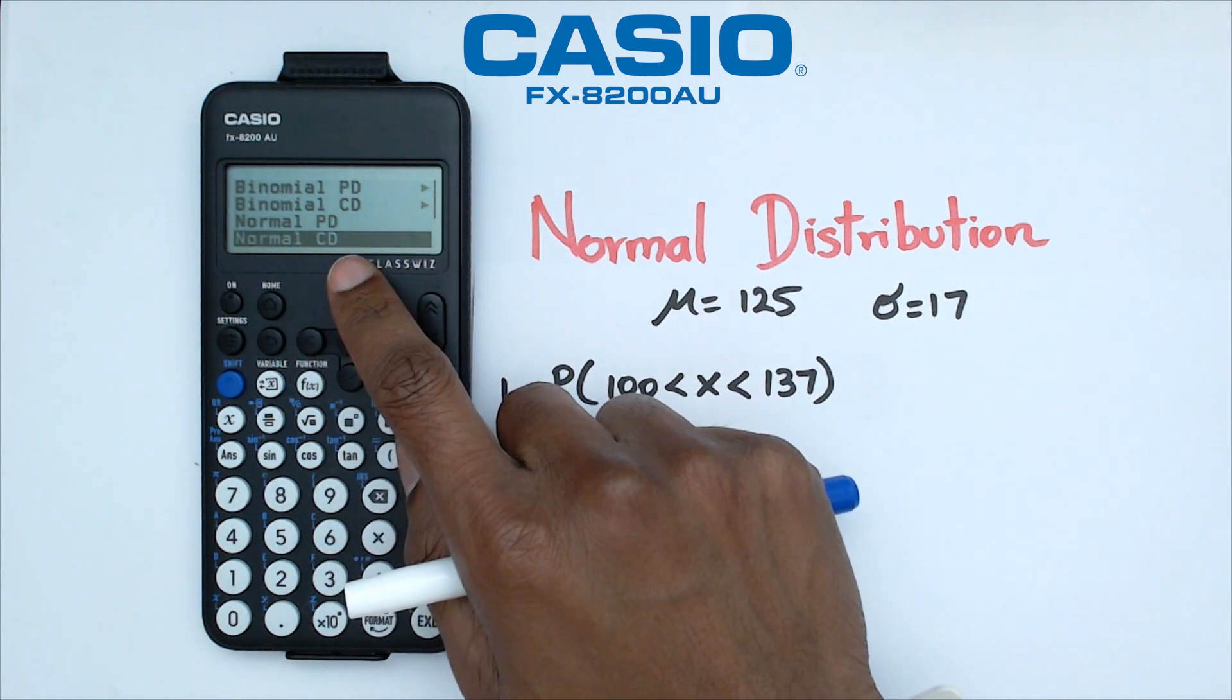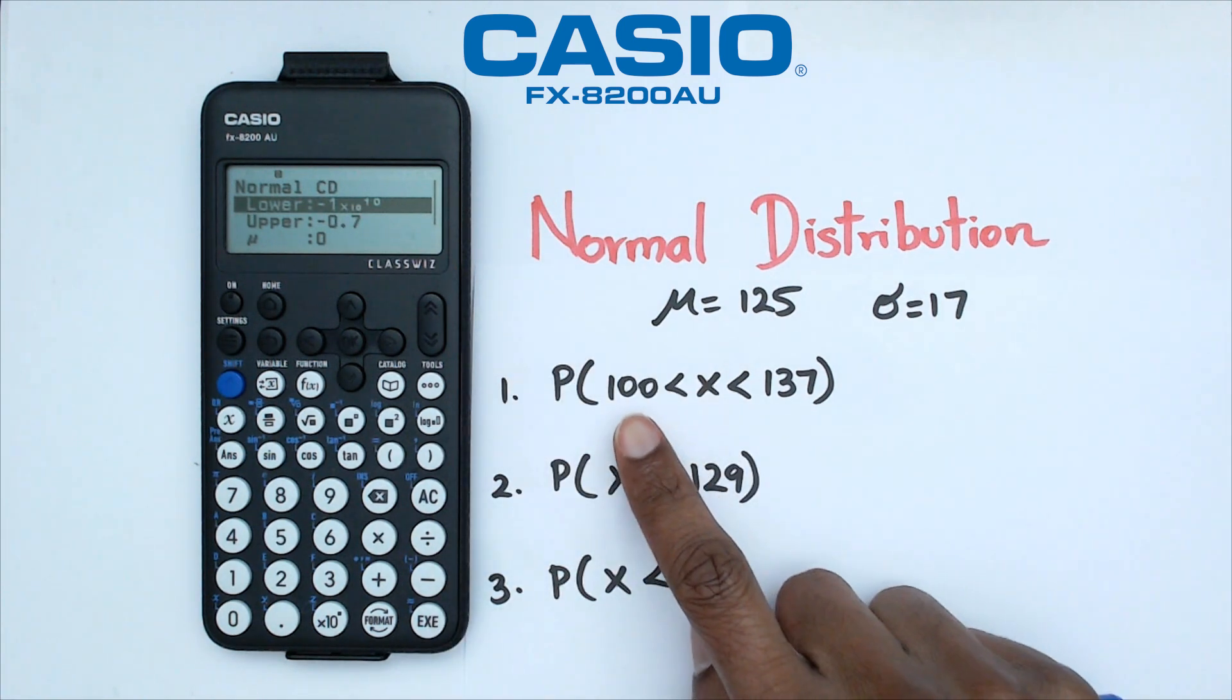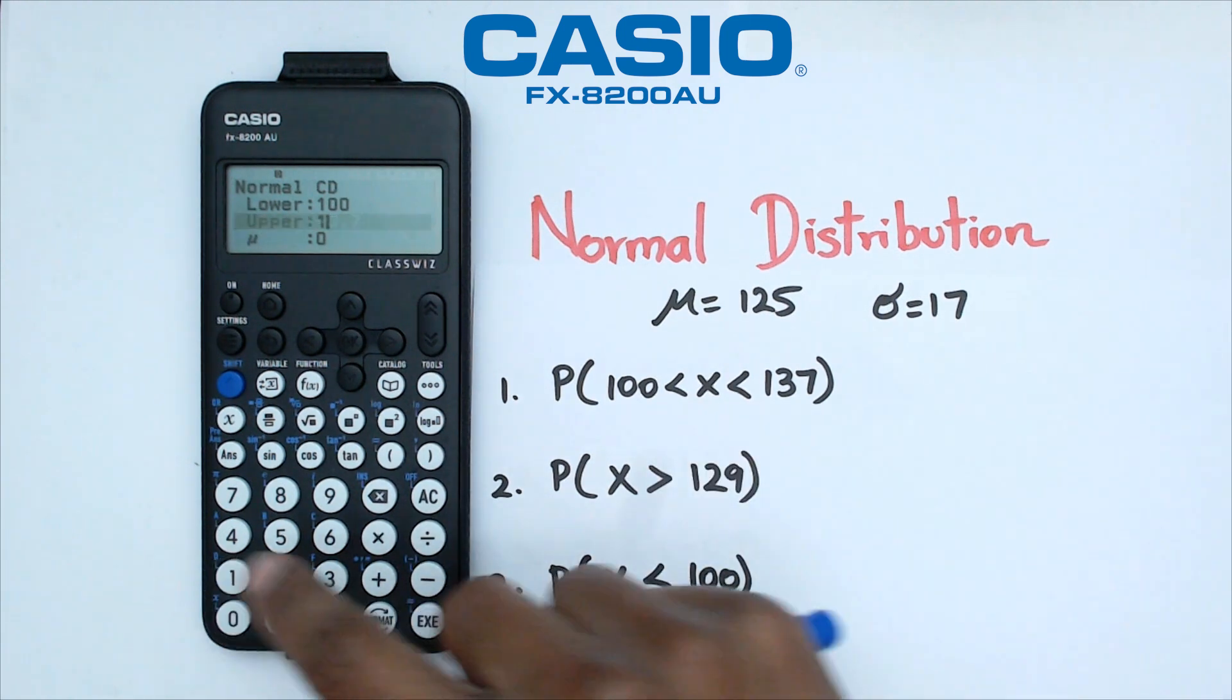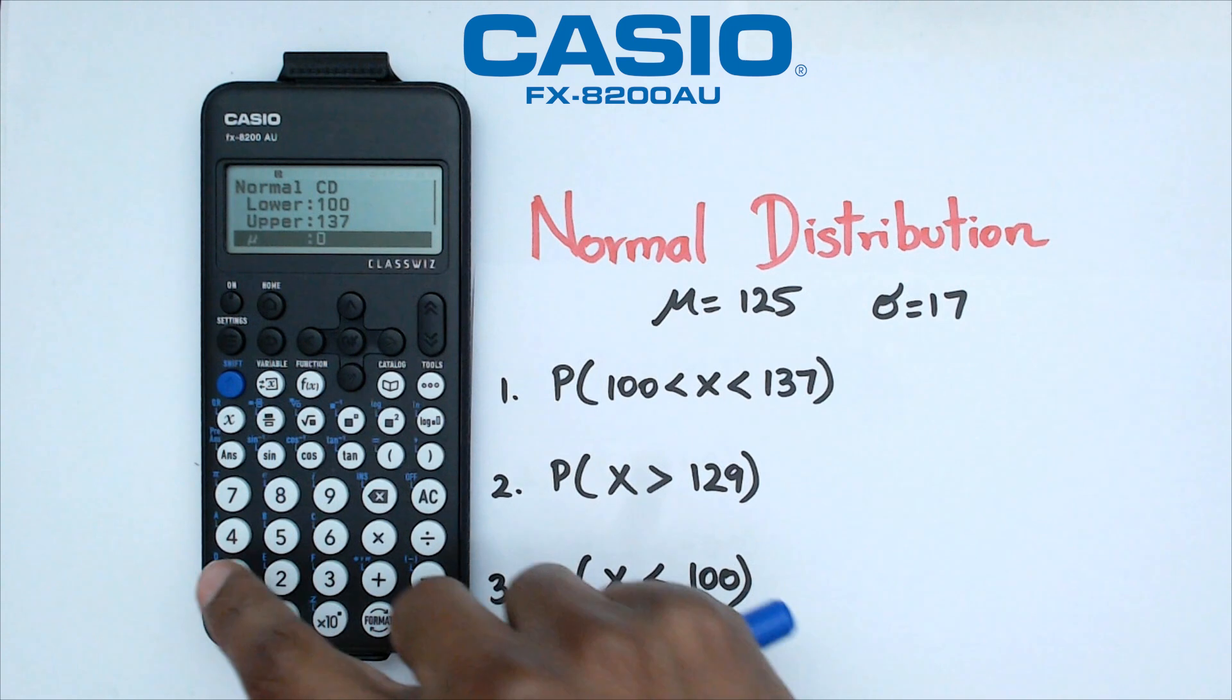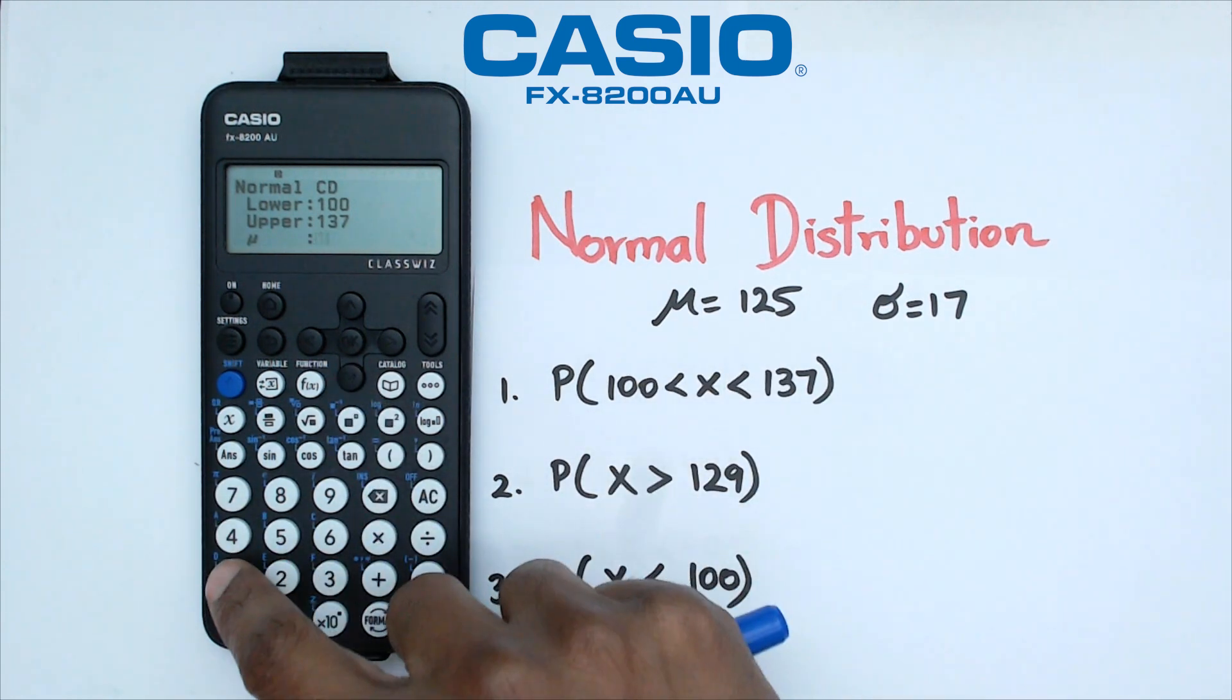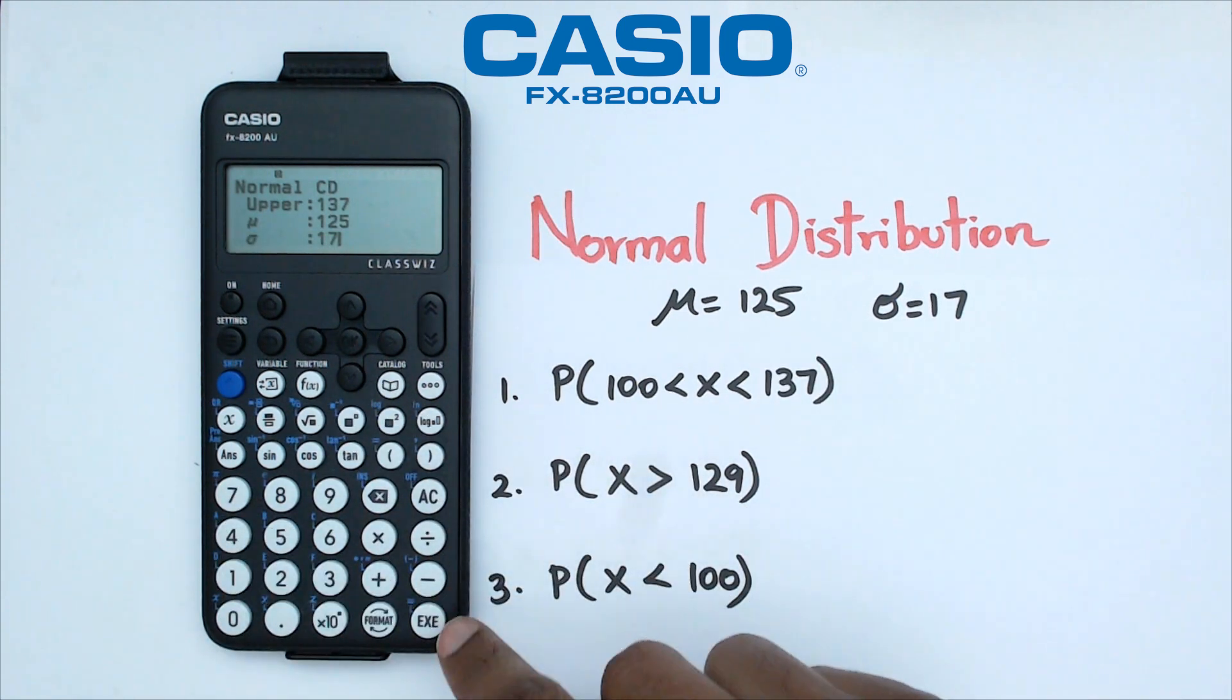We've got to put in our lower value for problem number one, which is going to be 100, and then the upper value is going to be 137. Our standard deviation is 17... oh sorry, that's actually the mean. Let's get rid of that. That's going to be 125, and then our standard deviation is 17. Then we're going to click on Execute, and we get a probability of 0.6892.